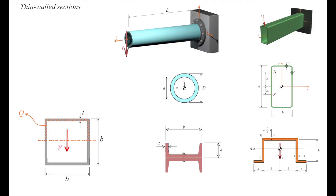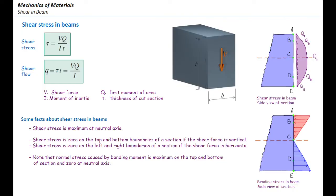Previously, we talked about regular shapes like rectangles or circles and how to determine shear stresses in those elements. For a rectangular shape, we developed two equations: shear flow q equals VQ over I, where V is the shear force, Q is the first moment of area, and I is the moment of inertia. Shear stress is shear flow divided by thickness.